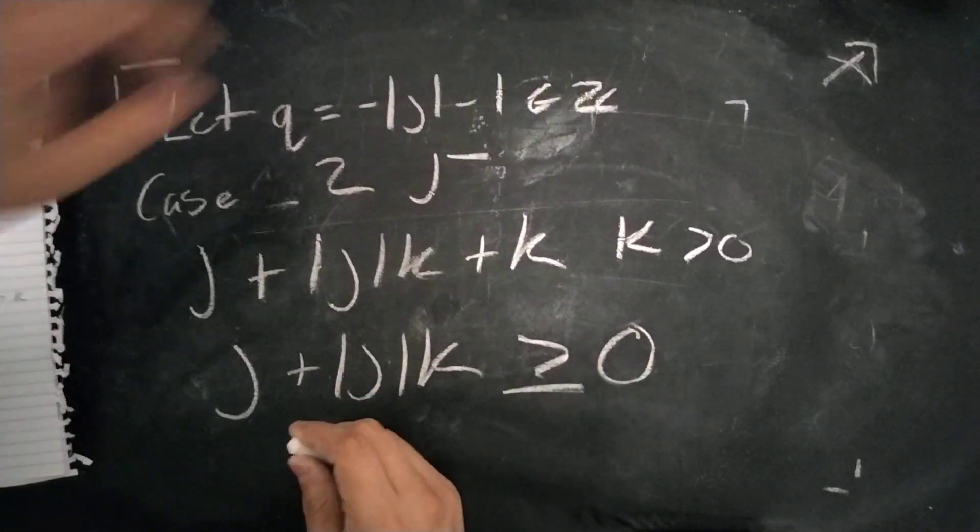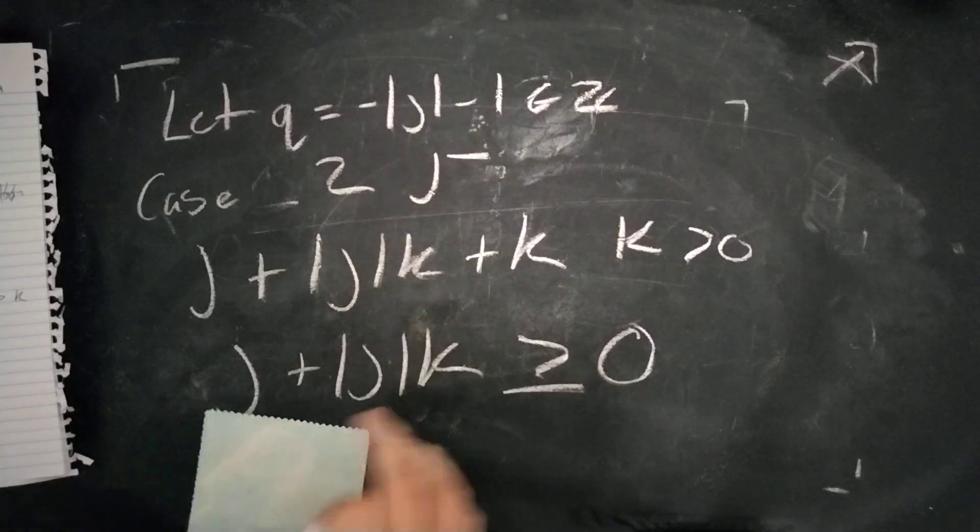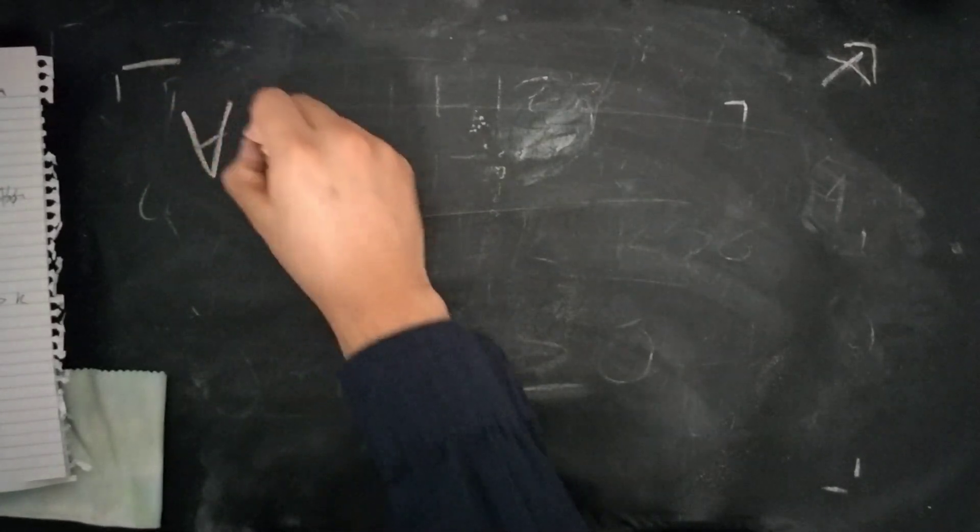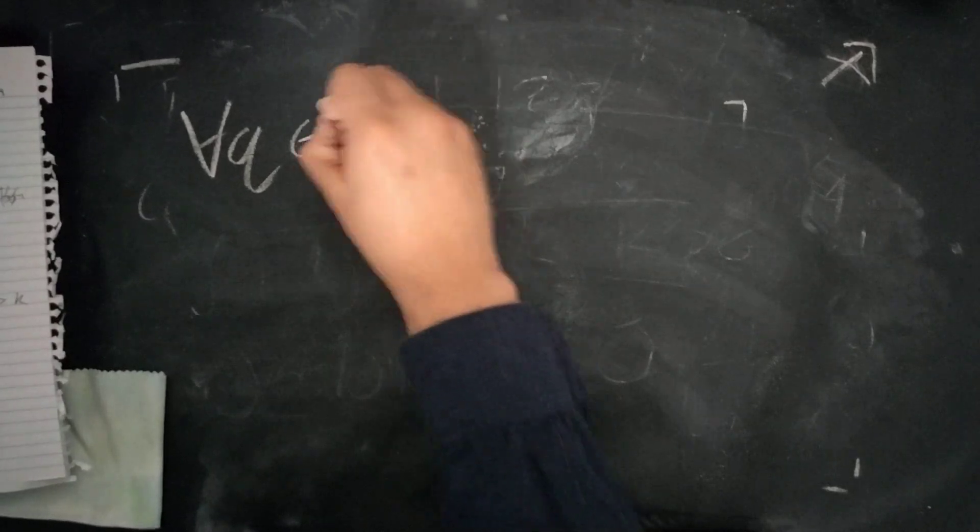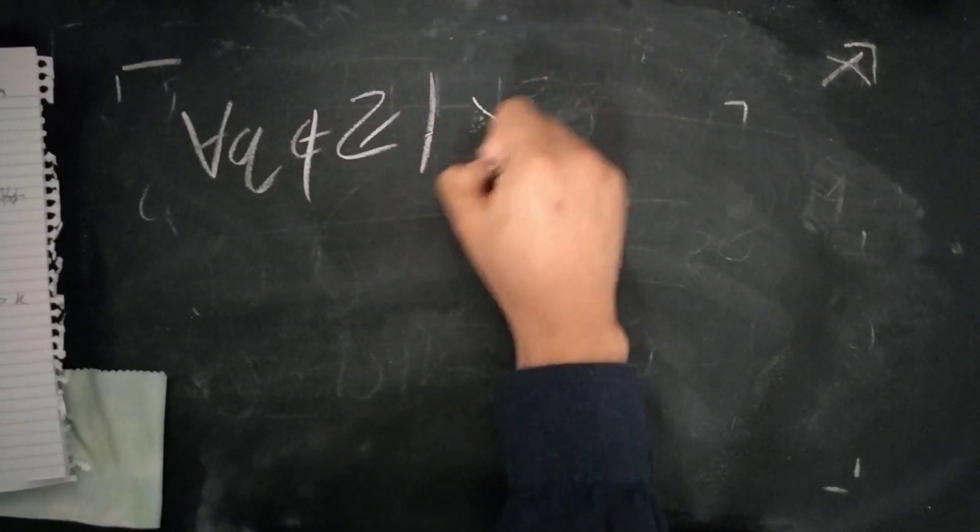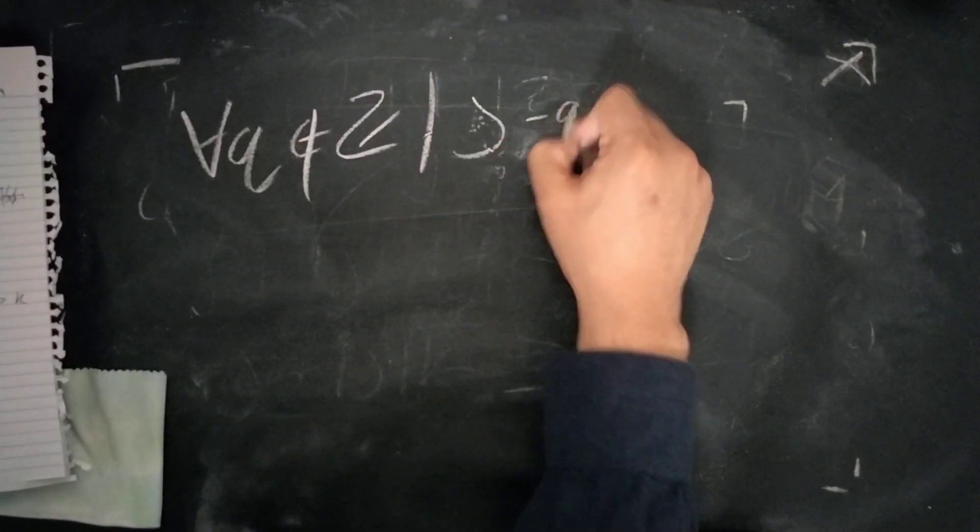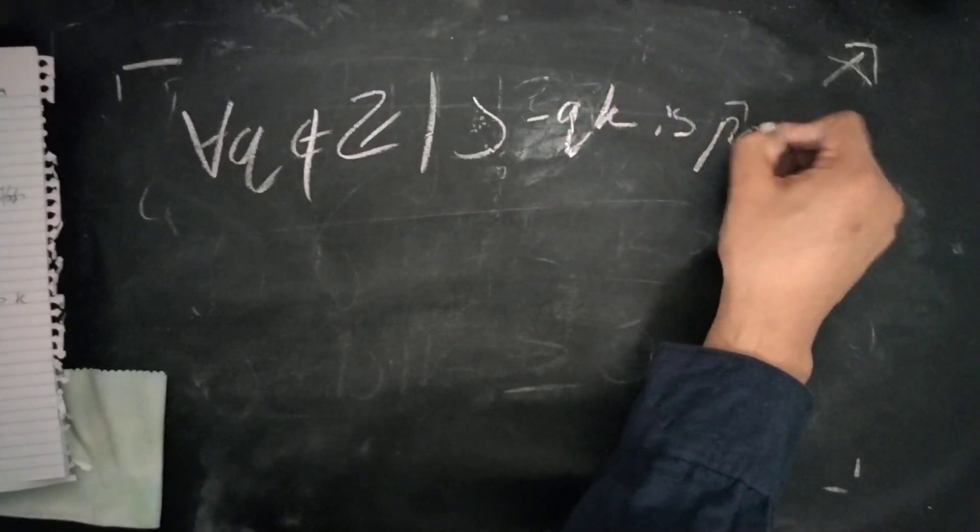Which shows, in which case, we've reached a contradiction. Because we were trying to disprove this, that for all Q integers, there is no integer such that J minus QK is positive.